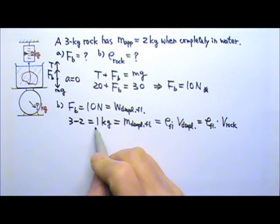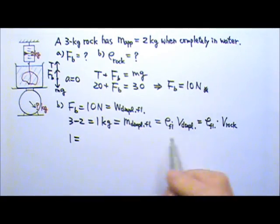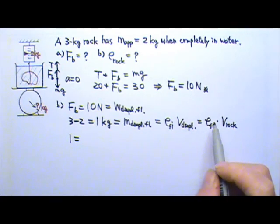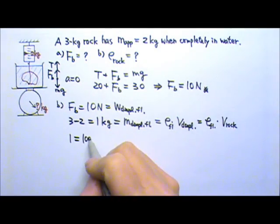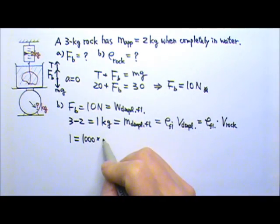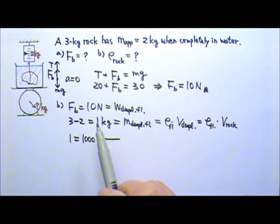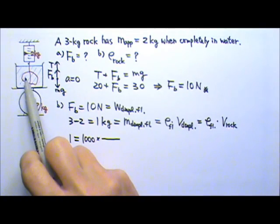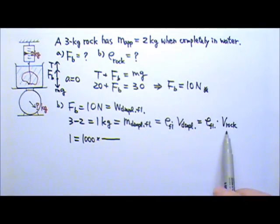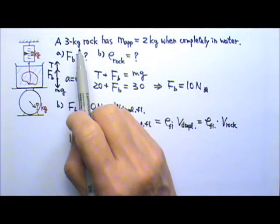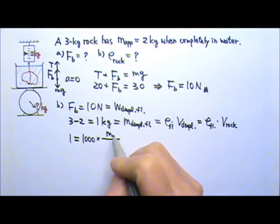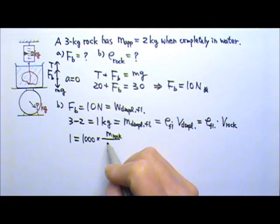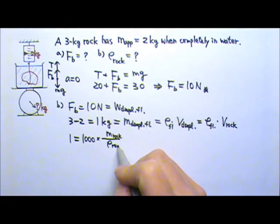So we have 1 kg equals to the density of the fluid. It is water, so the density of the water is 1000. And the volume of the rock - we do not have the volume of the rock directly. But we can find the volume of the rock using the mass divided by density. So it's the mass of the rock divided by the density of the rock.